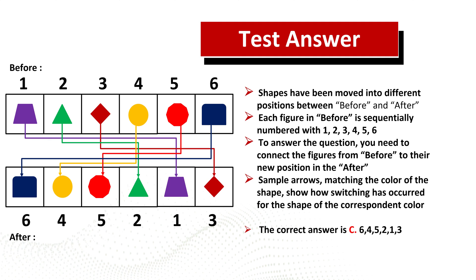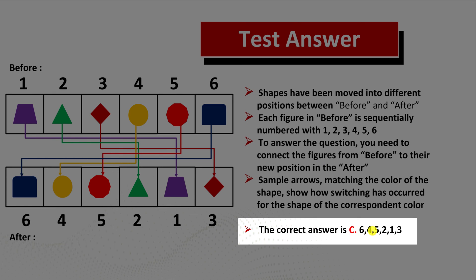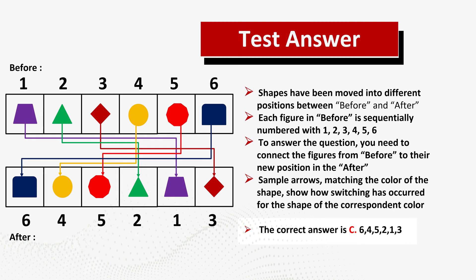To solve this, trace the position of each object from before to after. For example, the green triangle was in position two before and after switching moved into position four. These types of questions are not very challenging in concept — the challenge is the limited time with six objects. A useful strategy is to pick some specific objects and trace only those until you identify the correct answer. The correct choice here is choice C: six four five two one three. Check out my ebook in the description for more practice problems.